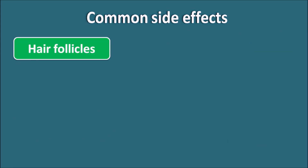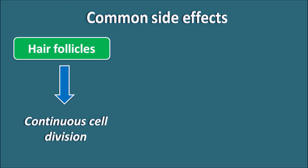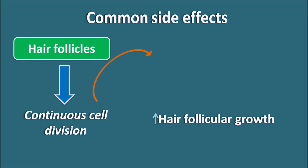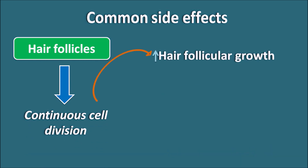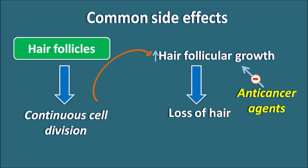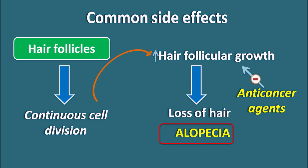The next area is hair follicles. Hair growth occurs because of continuous cell division at the hair follicles. Anti-cancer agents can inhibit this hair follicular growth, thereby resulting in the loss of hair. This loss of hair is called alopecia, and it is one of the important side effects of many anti-cancer agents because of their inhibition of hair follicular growth.